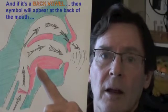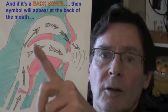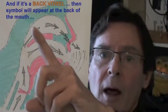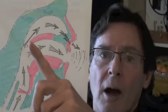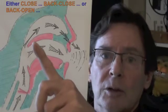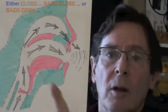And if it's a back vowel, then the symbol will appear at the back of the mouth — either close, back close, or back open.